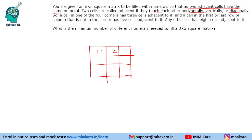If we use 1 here, we cannot use 1 in the three adjacent cells, but we can use 1 in the non-adjacent cell. Following this logic, we place 1 again, and again — we can see that we can use four 1s such that no adjacency condition is violated.